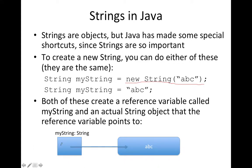They create an object reference variable called myString, and this is just a box that's going to have a pointer. It's either going to be null if we don't give it an object to point to, or it's actually going to point at a string object. In both of these cases, we've actually created a string object, put the letters ABC in it, and now myString points at ABC. Both of these lines of code do the exact same thing.